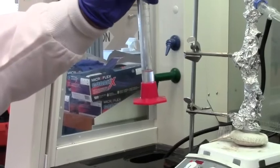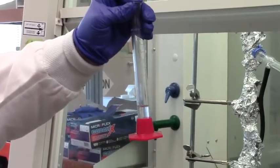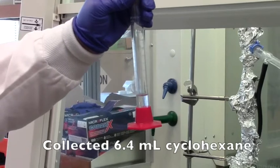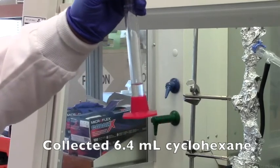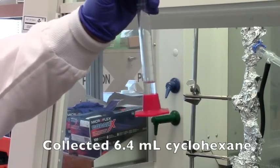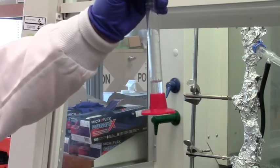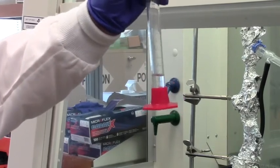This is the results of the first fraction we collected that should be mostly cyclohexane and we collected 6.4 mls. I changed the receiving flask when the temperature went up to about 85.